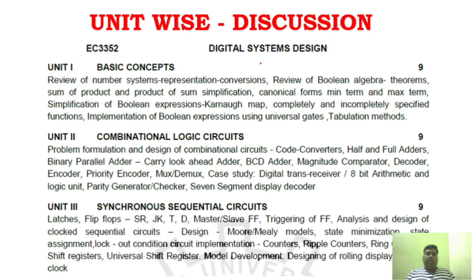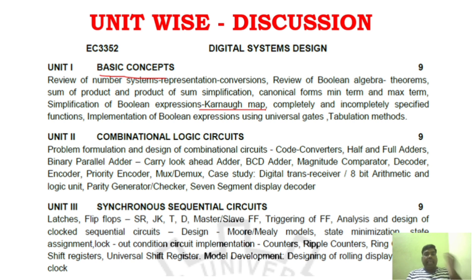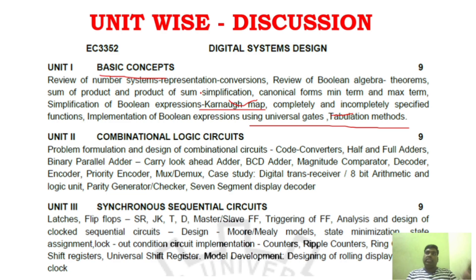We will start with unit-wise discussion. Unit 1 covers the basic concepts: number system conversion, Boolean algebra, and the tabulation method, which is very important. The K-map method with variables is also covered, along with simplification of Boolean expressions. These are the key areas for Unit 1.